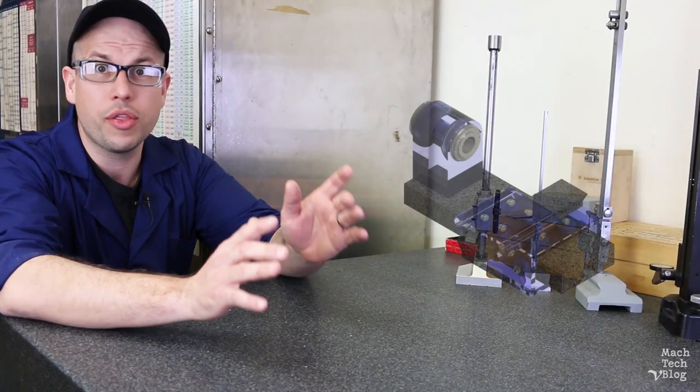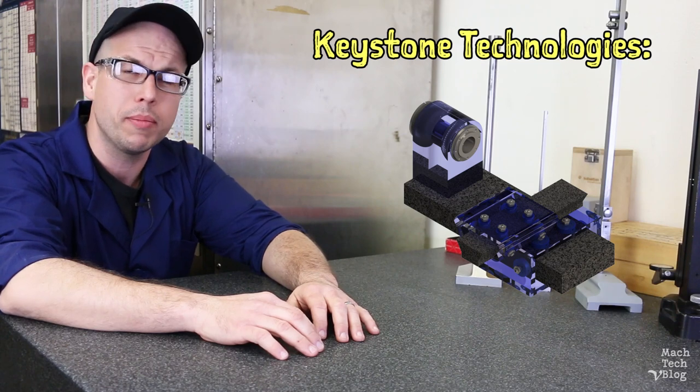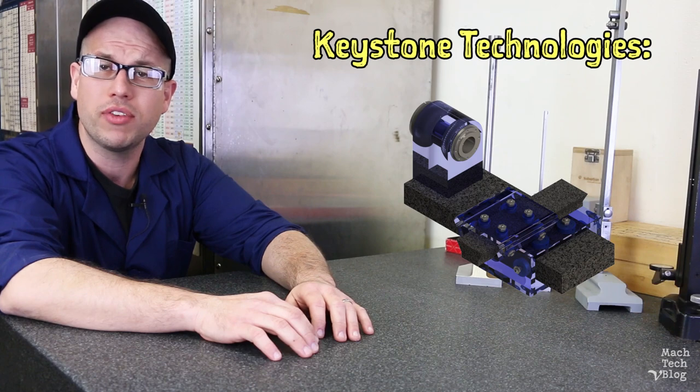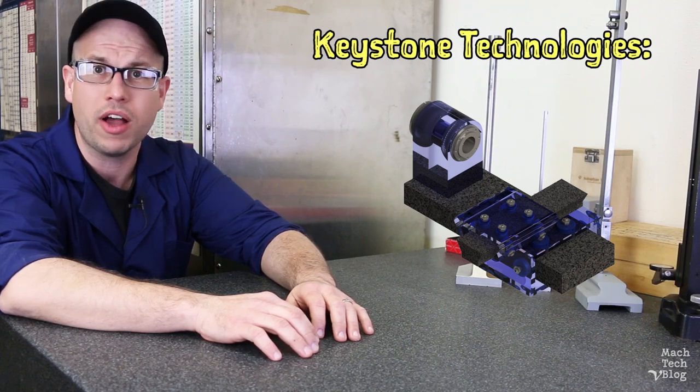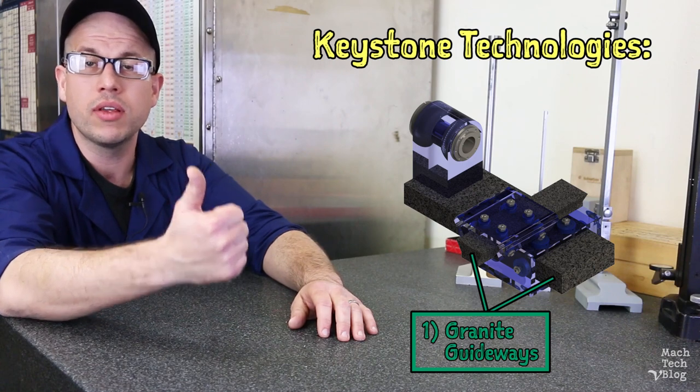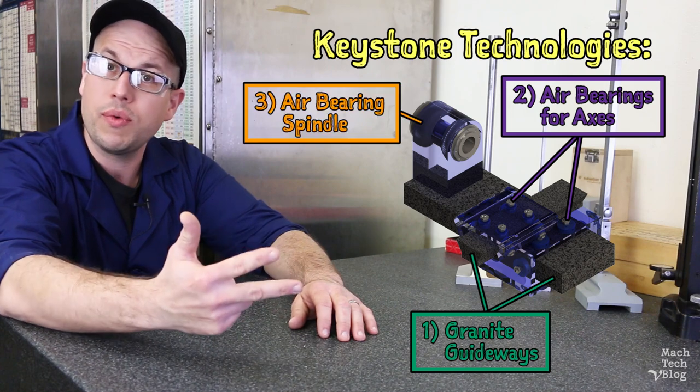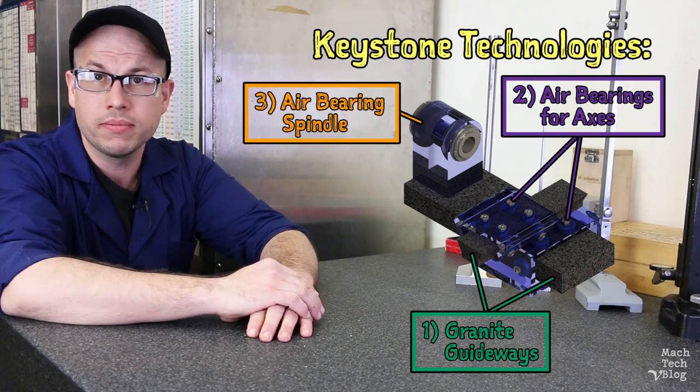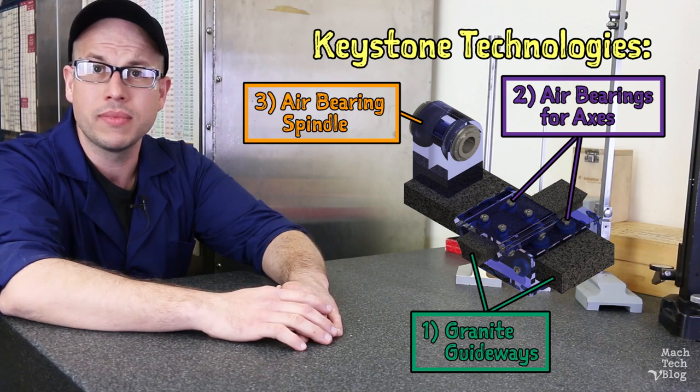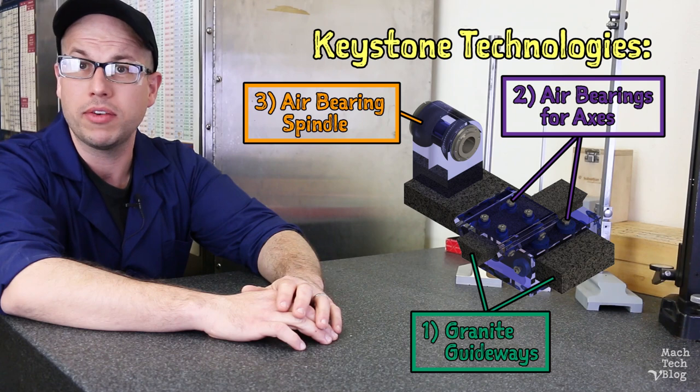The way I see it, there are three keystone technologies which you would need to research and develop in order to determine whether building a DIY ultra-high precision lathe in a small shop environment is even feasible. One, the granite guideways. Two, the air bearings for the longitudinal and transverse axes, and three, the air bearing spindle. Here are a few solutions I'd like to test out myself. By the way, there are links in the description to all of the resources I'm about to mention.